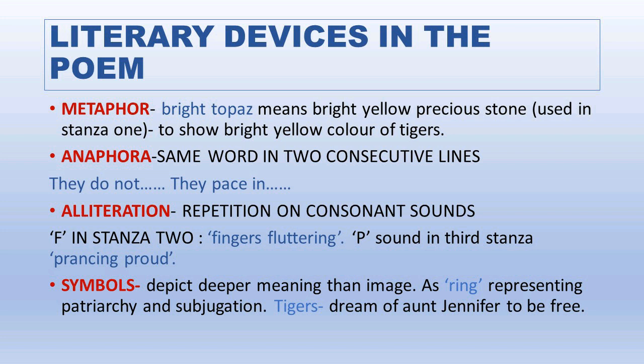Symbols: the ring is a symbol of patriarchy, subjugation, and the duties and responsibilities that come after marriage, all of which burden Aunt Jennifer. The tigers represent Aunt Jennifer's dream to be free — they symbolize her desire and ambition to seek independence. These are the key literary symbols used in the poem.